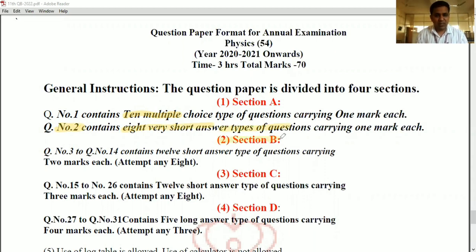Then there will be another section that is section B and from question number 3 to 14, it will contain 12 short answer type questions and each carry two marks. And out of 12, you have to solve any eight questions. That means you will get total 16 marks for this. Now, then there will be section C and this section will contain question number 15 to question number 26. Again, it will contain total 12 questions and you have to attempt any eight. Each carry three marks. That means 24 marks will be for section C.